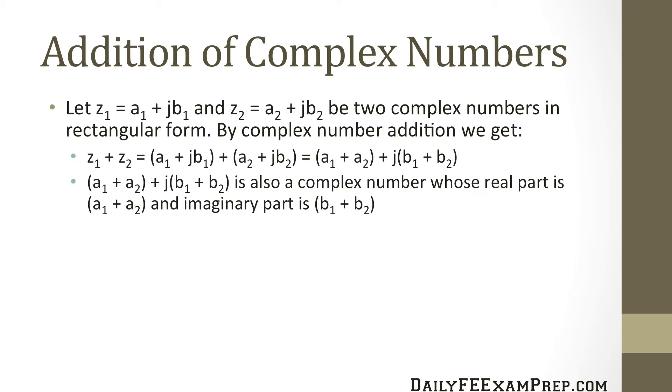Now the addition of complex numbers goes like this. For the formula we're going to let z1 equal a1 plus jb1 and z2 equal a2 plus jb2 be two complex numbers in rectangular form. By complex number addition we get z1 plus z2 equals a1 plus jb1 plus a2 plus jb2 and that equals a1 plus a2 plus j times b1 plus b2, the imaginary side of the equation.